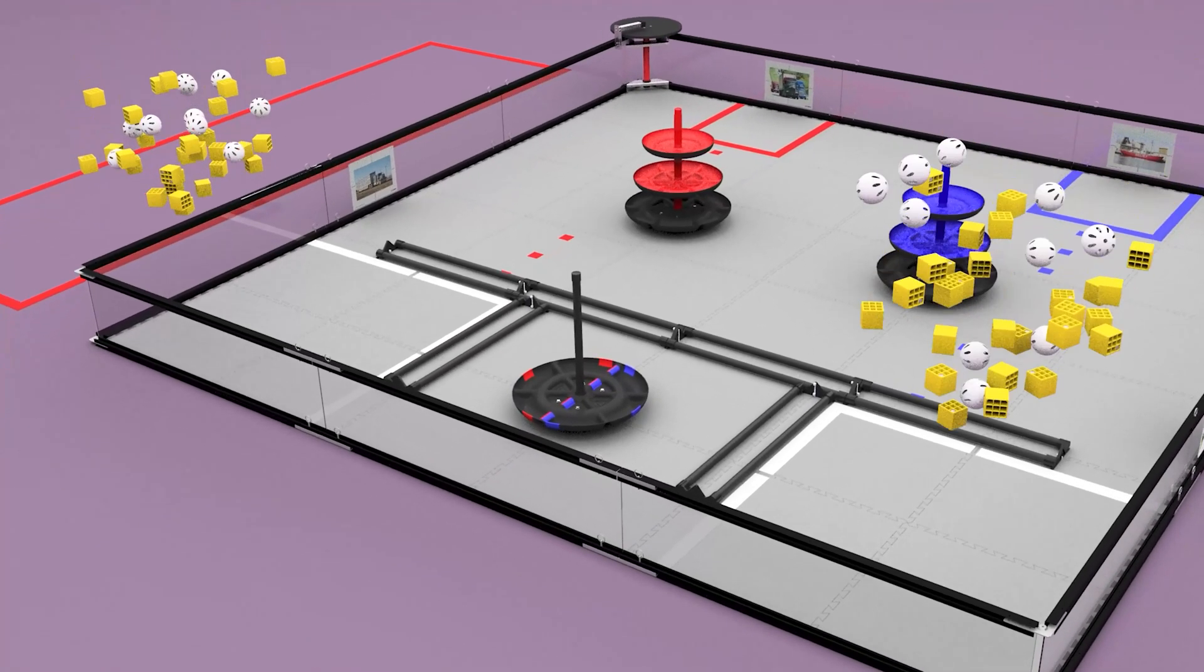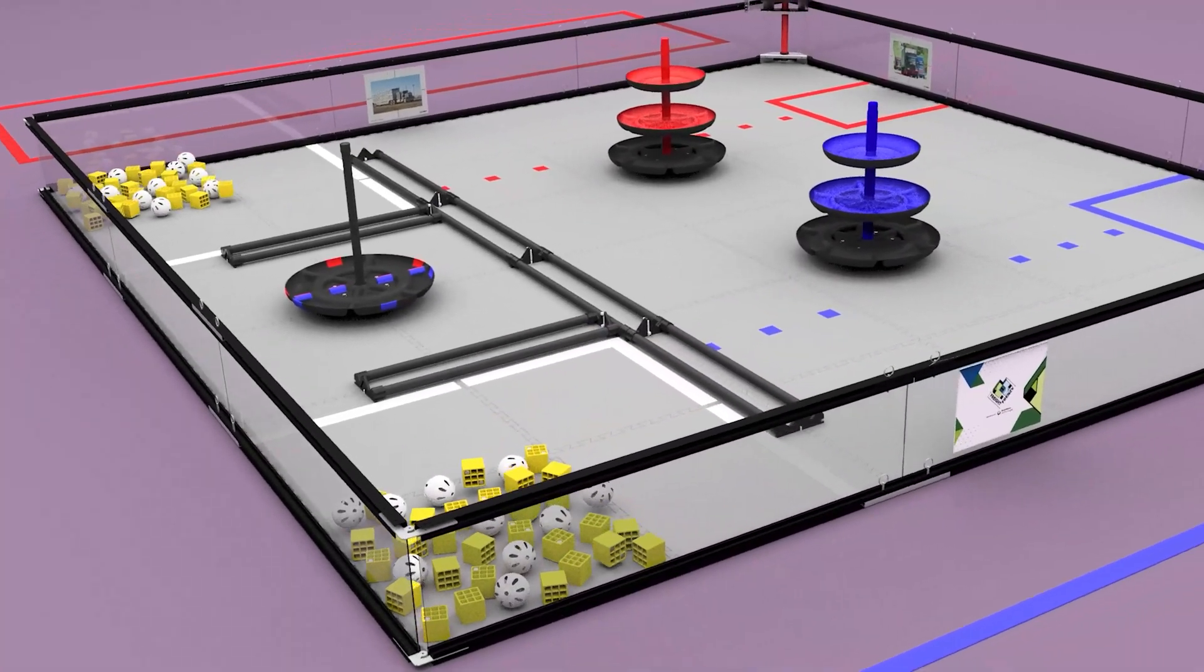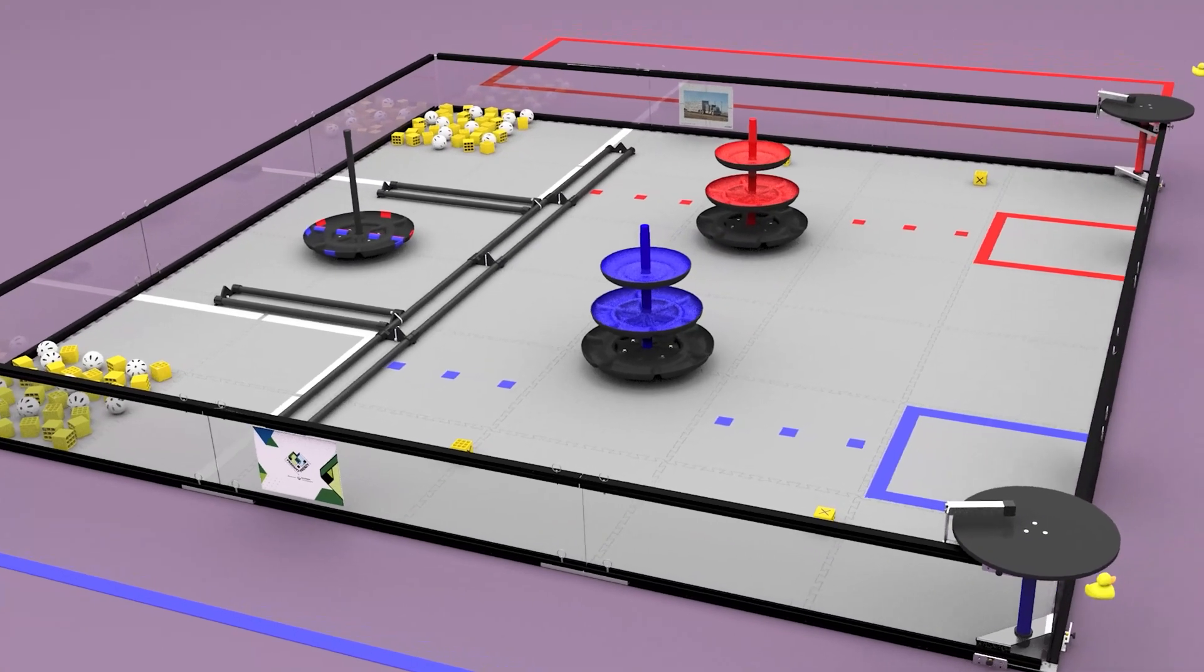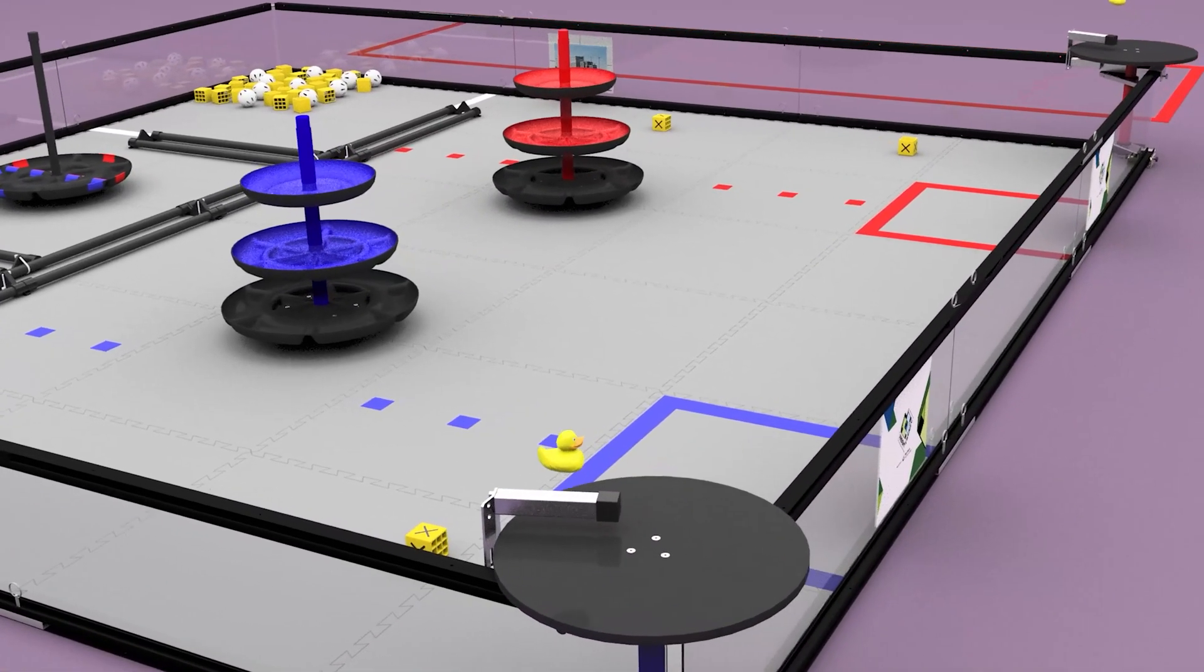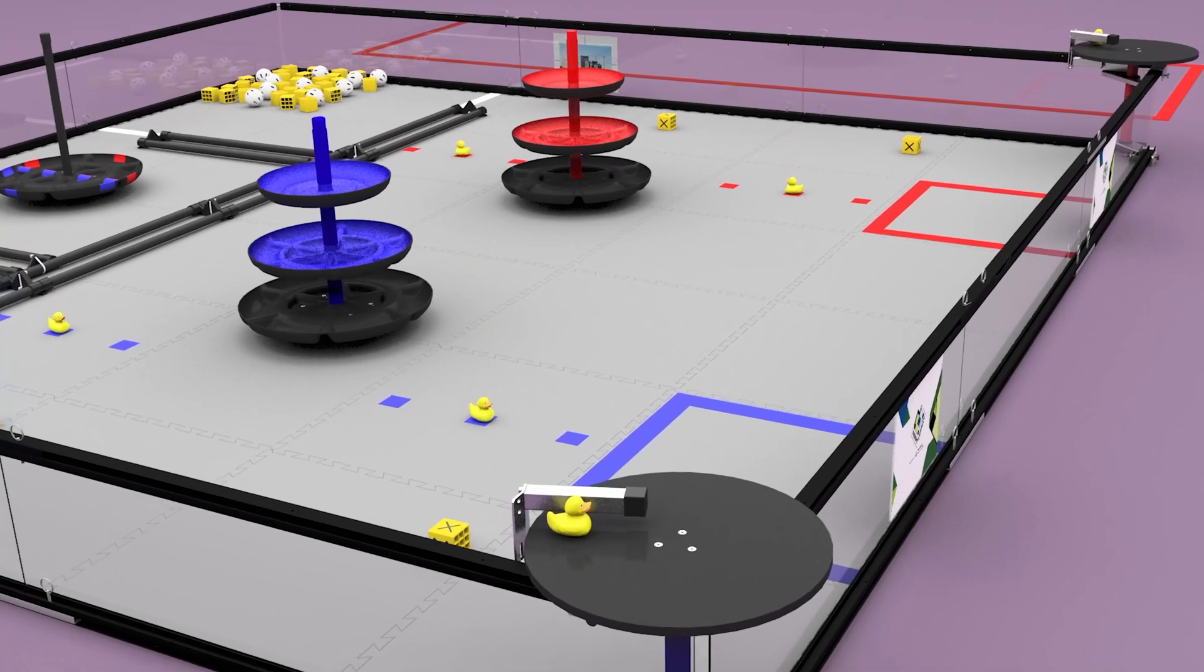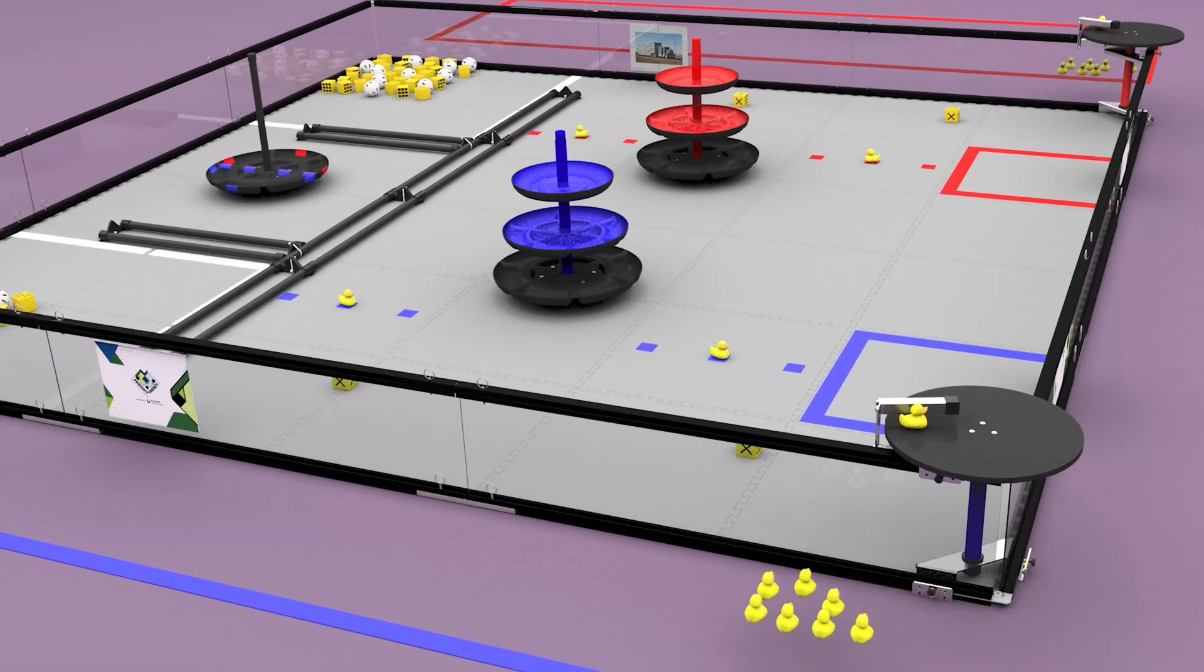Before each match, the freight is stored in the warehouses, and a pre-load box is placed onto the field for each robot. A duck is placed onto each carousel and in the middle position of each barcode. The remaining ducks are stored in the alliance loading docks.